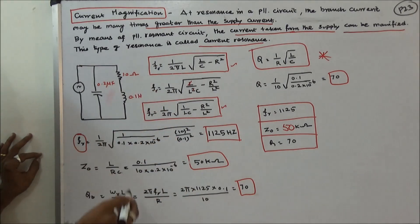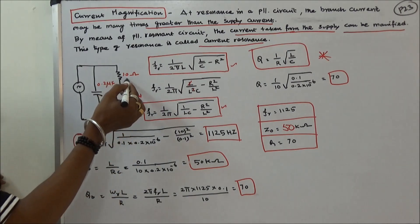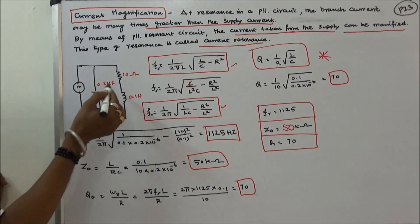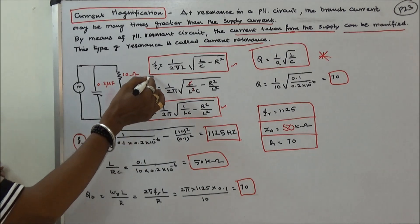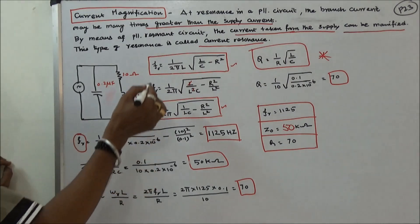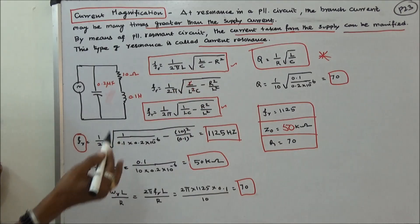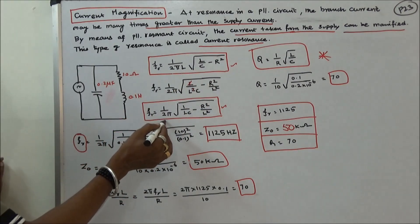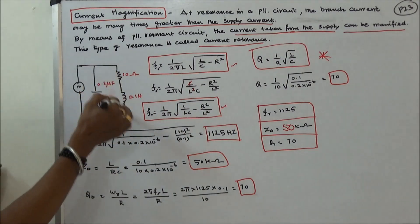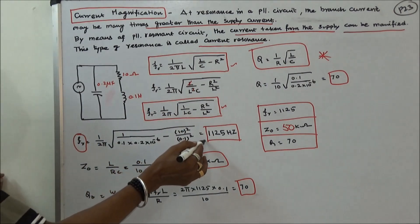Now we will work out one problem on a parallel resonance circuit. The given circuit has a resistor value of 10 ohms, inductance of 0.1 henrys, and capacitance of 0.2 microfarads. We need to calculate the resonant frequency, dynamic impedance, and quality factor. The resonant frequency FR equals 1 by 2π times √(1/LC − R²/L²). Substituting all values, the resonant frequency is 1,125 hertz.